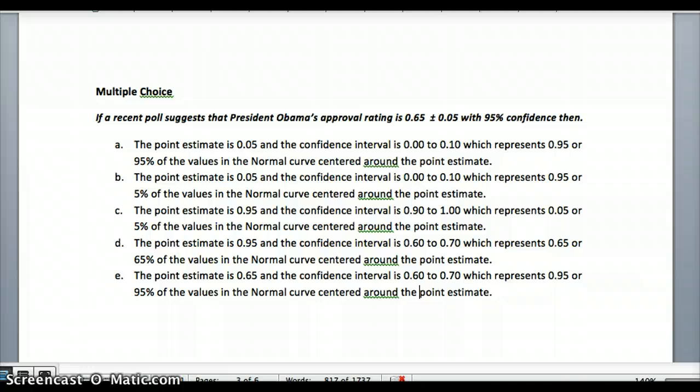A recent poll suggests Obama's approval rating is .65 plus or minus .05, or 65% plus or minus 5%, with 95% confidence. So please tell me which one of those represents the point estimate, the confidence interval, and then the percent of the time that the normal curve will be centered around that point estimate. So here are all the values. Give you a second to look over that. Feel free to go back.